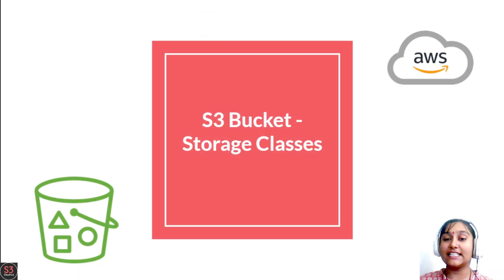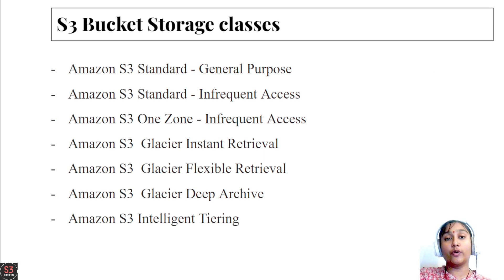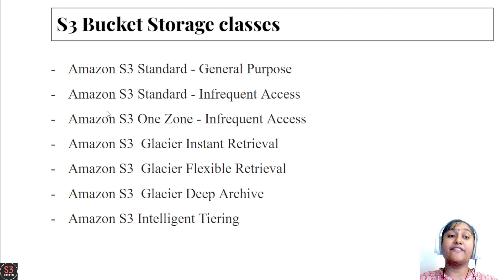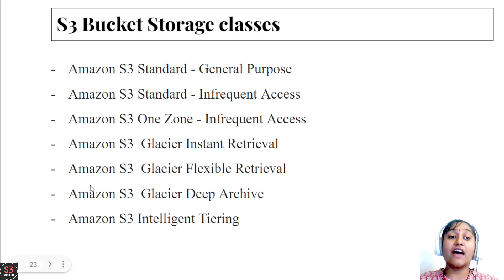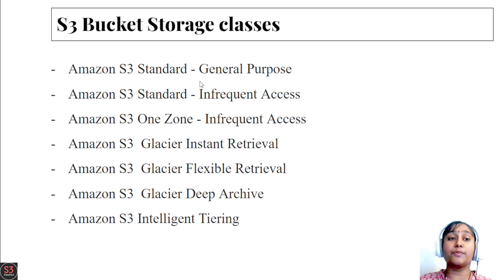Good morning and welcome to part 6 of our S3 service. In this video we are going to see the storage classes and the different types of storage classes provided by S3, and we'll also do some hands-on. We have: Amazon S3 Standard General Purpose, Standard Infrequent Access (Standard IA), One Zone Infrequent Access, Glacier Instant Retrieval, Glacier Flexible Retrieval, Glacier Deep Archiving, and Amazon S3 Intelligent Tiering.